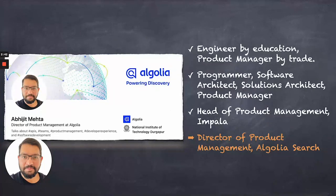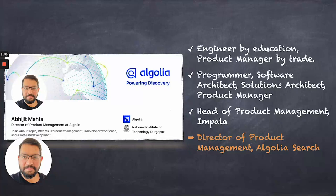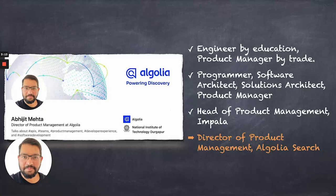My name is Abhijit Mehta. I am Director of Product Management at Algolia, and I work on the Algolia search team. Quickly on my background: I'm an engineer by education and currently a product manager by trade. I've been a programmer, software architect, solutions architect, and product manager in my past lives. Just before Algolia, I was head of product management at Impala, which is a travel tech startup in the UK. And as I mentioned, I am working and leading on the Algolia search team, currently as Director of Product Management.